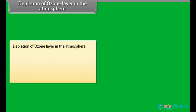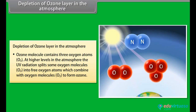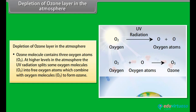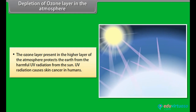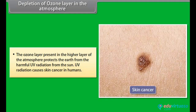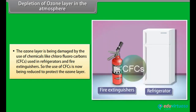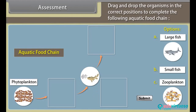Ozone molecules contain three oxygen atoms (O₃). At higher levels in the atmosphere, UV radiation splits some oxygen molecules (O₂) into free oxygen atoms, which combine with other oxygen molecules to form ozone. The ozone layer protects the earth from harmful UV radiation from the sun. UV radiation causes skin cancer in humans. The ozone layer is being damaged by chemicals like chlorofluorocarbons (CFCs), used in refrigerators and fire extinguishers, so the use of CFCs is now being reduced to protect the ozone layer.